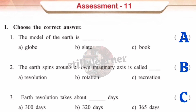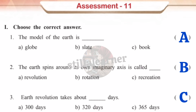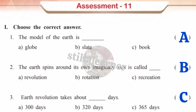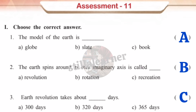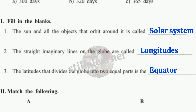Assessment number 11, choose the correct answers: The model of the earth is → A (Globe). The earth spinning around its own imaginary axis is called → B (Rotation). Earth's revolution takes about → C (365 days).